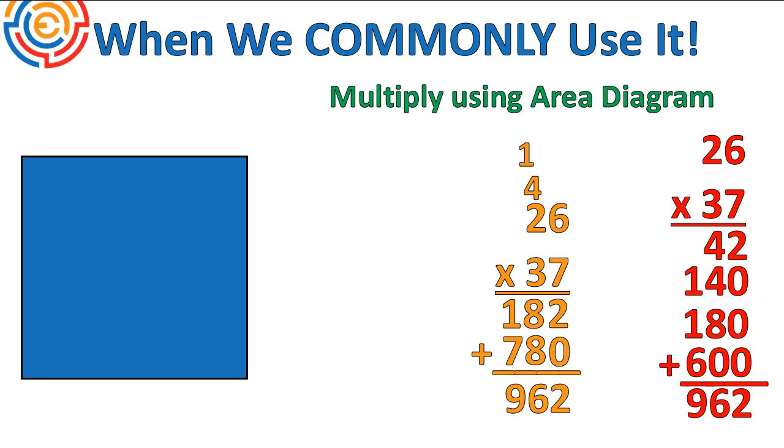So let's look at the area diagram now with these two numbers, 26 times 37. We're going to divide it up. The actual area of the squares don't really matter as much, as long as we're dividing up each place value.